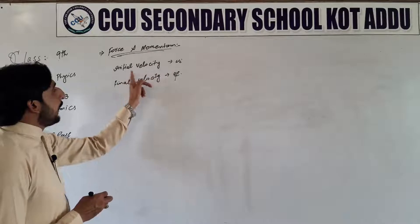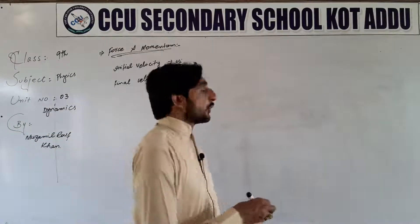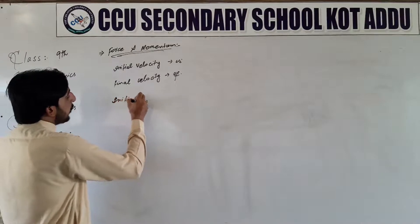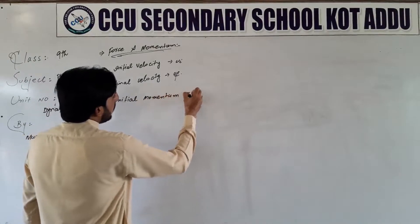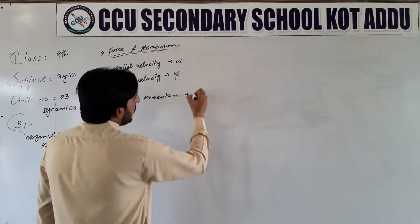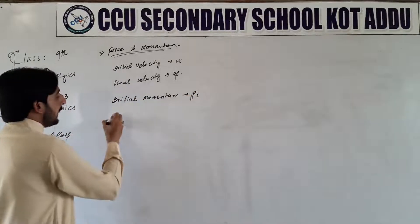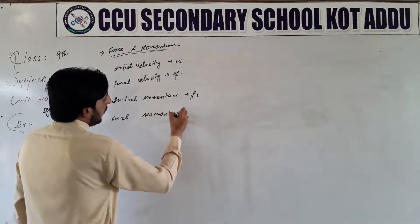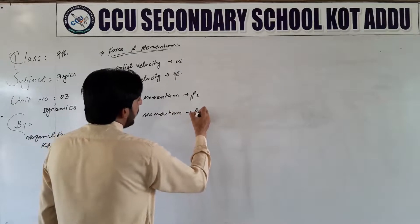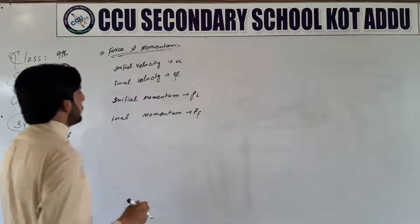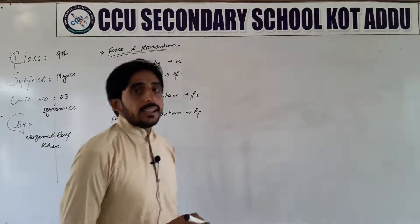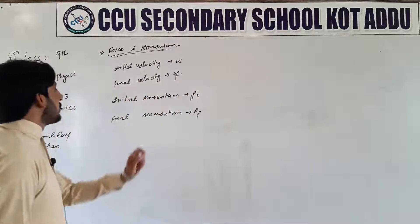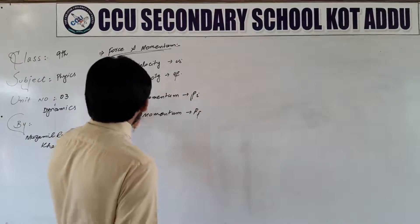اگر ہمارے پاس initial velocity vi ہے اور final velocity vf ہے، تو اب momentum دیکھنا شروع کریں۔ Momentum کو ہم p سے represent کرتے ہیں۔ Initial momentum pi ہوگا، final momentum pf ہوگا۔ If there is an initial velocity vi and a final velocity vf, then initial momentum is pi and final momentum will be pf.